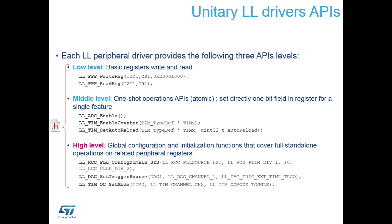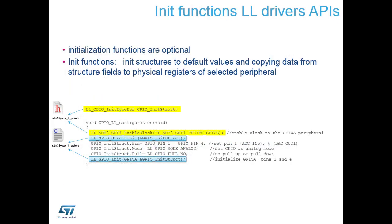It comes down to personal coding preferences. If you want to keep code small and brief and write your own comments, use the low level. If you prefer the higher level approach, you don't have to write as many comments yourself — you can see what's going on within the code. If you choose to use the initialization functions — which is what the CubeMX tool does when you select low layer libraries — you gain just one extra C structure for initialization, such as configuring GPIO pins, with minimal impact on project size.